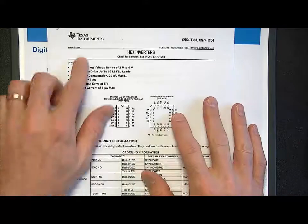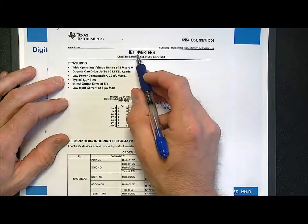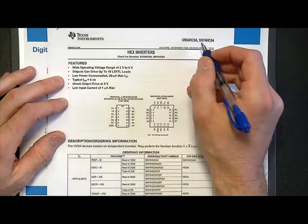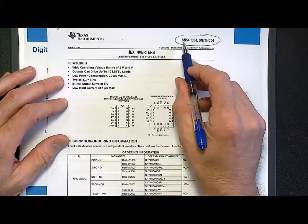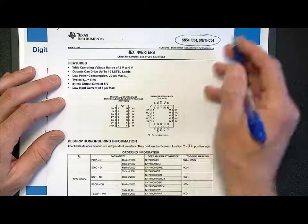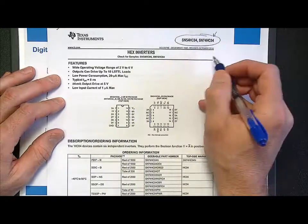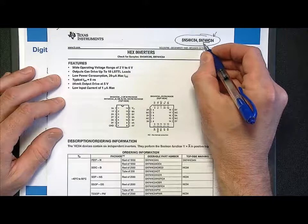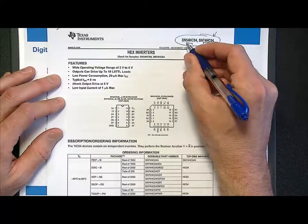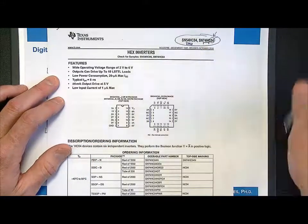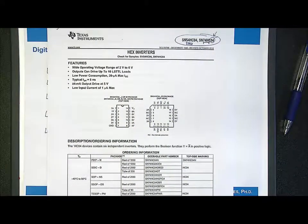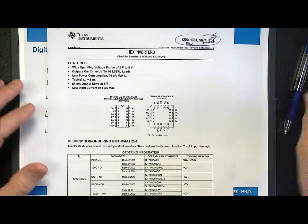This is an inverter from Texas Instruments, and the primary title on this is hex inverter. It's a datasheet that covers two specific parts: SN54HC04 and SN74HC04. This is essentially the logic family called 74HC and 54HC — a group of parts designed to operate together. The '04' means it's an inverter. So a 74HC08 would be a different part that works together with this particular inverter.